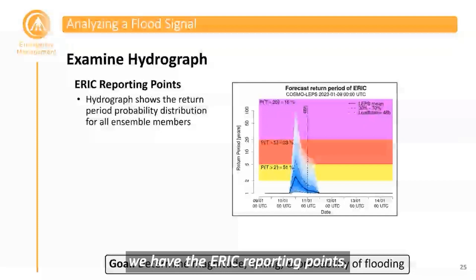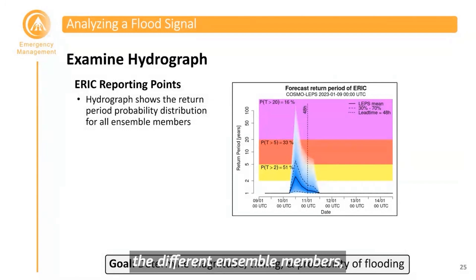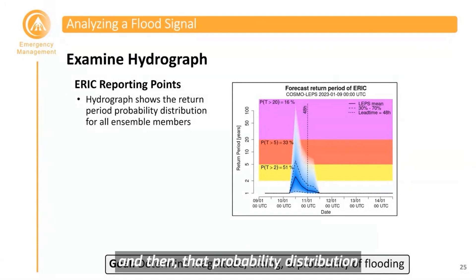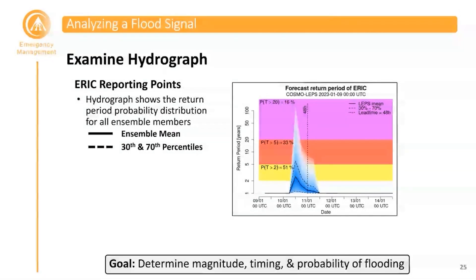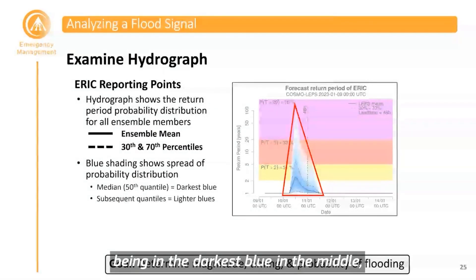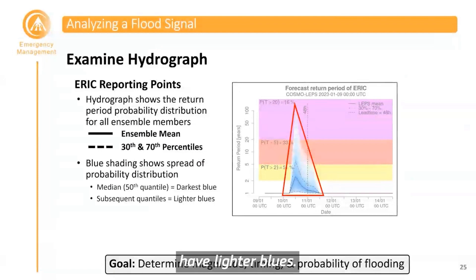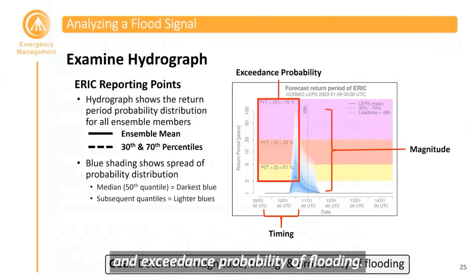For flash flooding, we have the ERIC reporting points, which show the hydrograph with the return period probability distribution for all ensemble members. Rather than showing individual time series for each ensemble member, an error-corrected probability distribution is calculated and displayed. The solid dark black line is the ensemble mean, and the 30th and 70th percentile quantiles are also shown. The blue shading shows the probability distribution, with the median in the darkest blue, and subsequent quantiles shown in lighter blues. The goal is to determine the timing, magnitude, and exceedance probability of flooding.